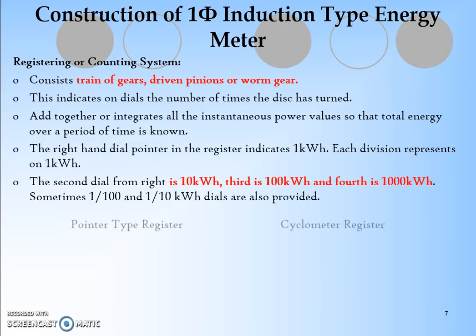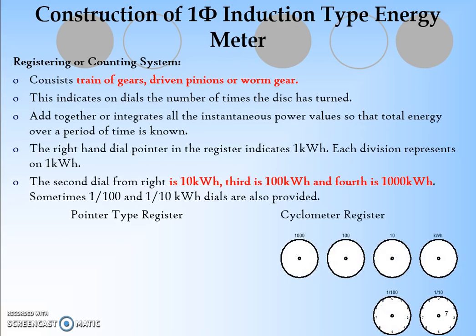Registering mechanism provides how many units have been consumed in a particular year or month. Different dials are provided. The second dial from the right is 10 kWh, the third is 100 kWh, and the fourth is 1000 kWh consumption. Sometimes 1/100 and 1/10 kWh are also provided for accurate results. The train gears are driven by pinions or worm gear.